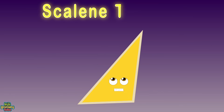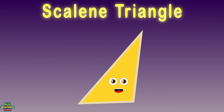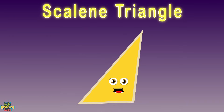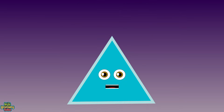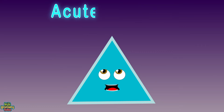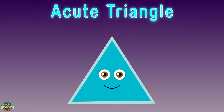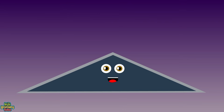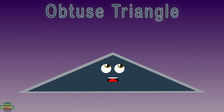I'm a scalene triangle and I'm a tough one to hide. I'm a triangle that has no equal sides. Hi! It's really great to meet you. I'm an acute triangle, which means I am a triangle with three acute angles. I may look sort of weird — I'm an obtuse triangle, a triangle with one obtuse angle and...